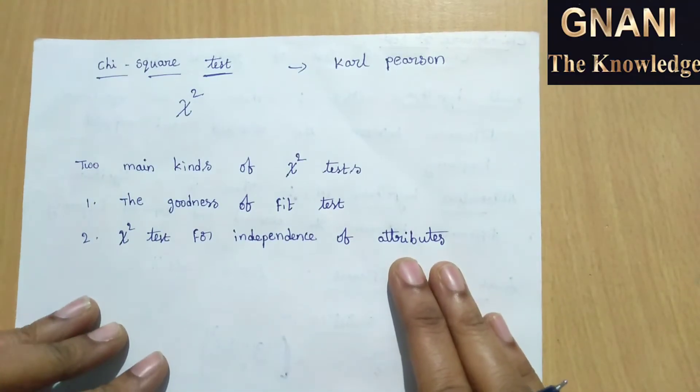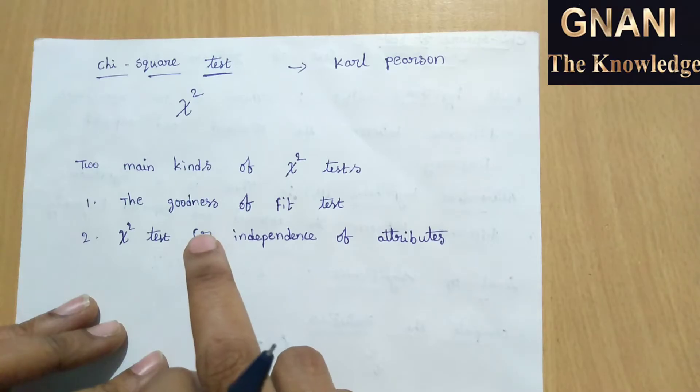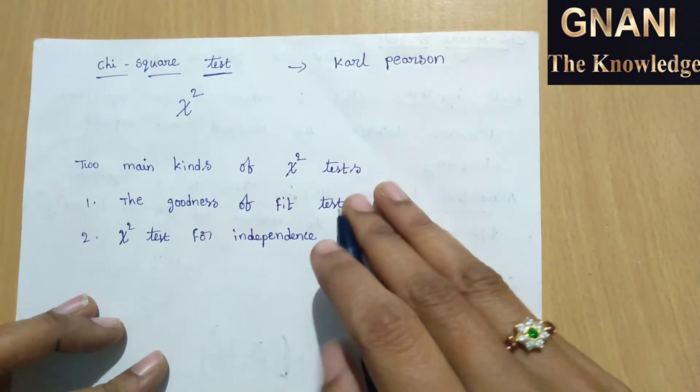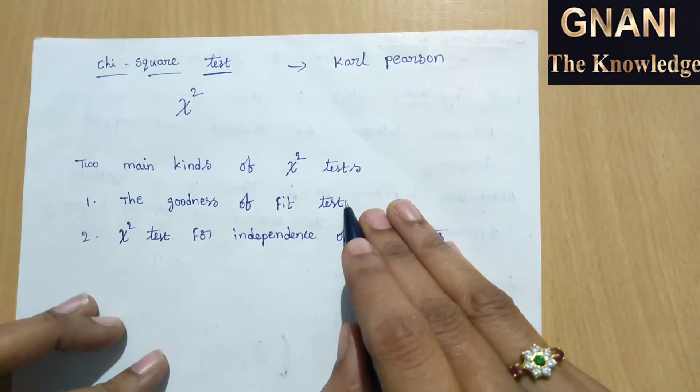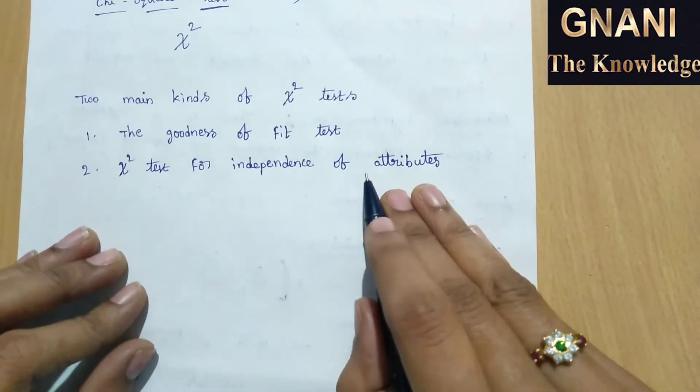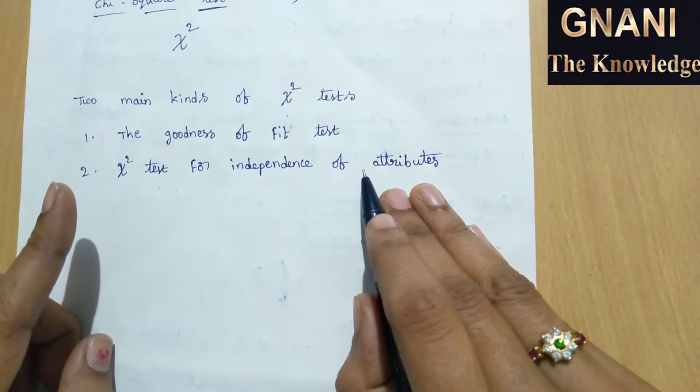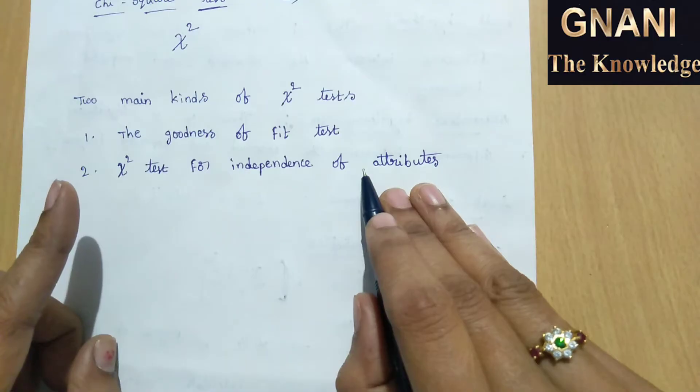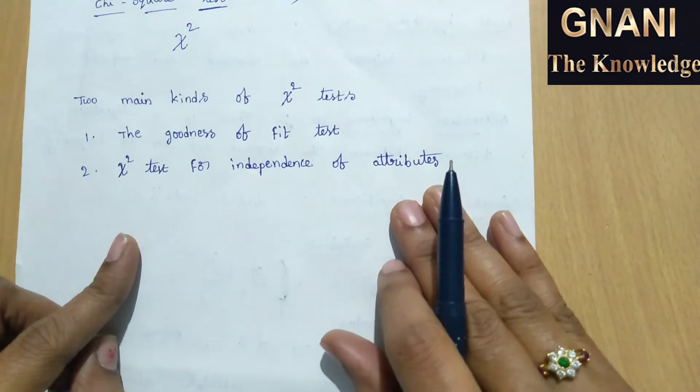Carl Pearson initially developed the chi-square test in 1900s and applied it to the goodness of fitness for frequency curves. Later in 1904 he extended it to contingency tables to test for independence between the rows and columns. That means chi-square test for independence of attributes.